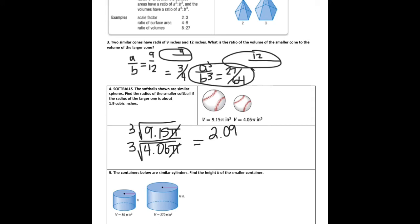So the cube root of 9.15, the cube root of 9.15 is about 2.09, and the cube root of 4.06 is about 1.59. So I need to find the radius of these knowing that the radius of the larger is about 1.9. So we're going to solve this by cross-multiplying. So I have 1.59x equals 2.09 times 1.9, which is 3.971. Divide that by 1.59. And I find out that the radius of the smaller one is, to the nearest tenth, 2.5.